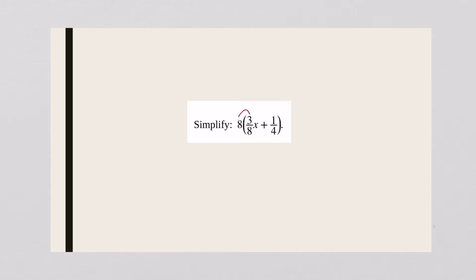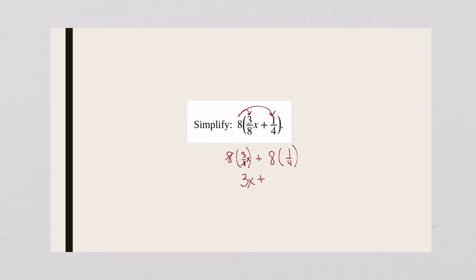This problem, we're going to multiply eight times three eighths x plus eight times one fourth. On eight times three eighths, the eights cancel each other, so I'm left with just 3x. Four will go into eight twice, two times one is two. So you get 3x plus 2.